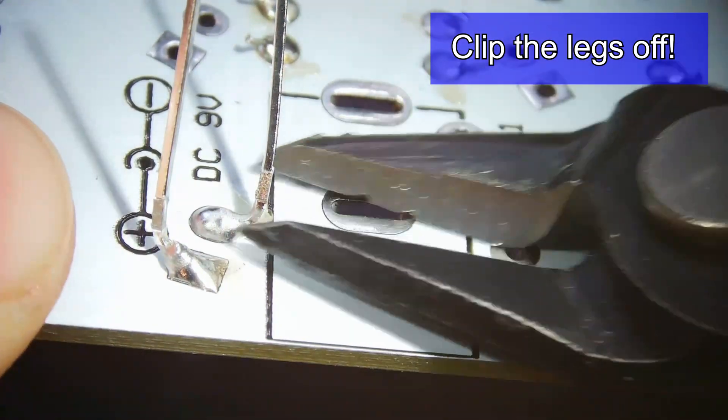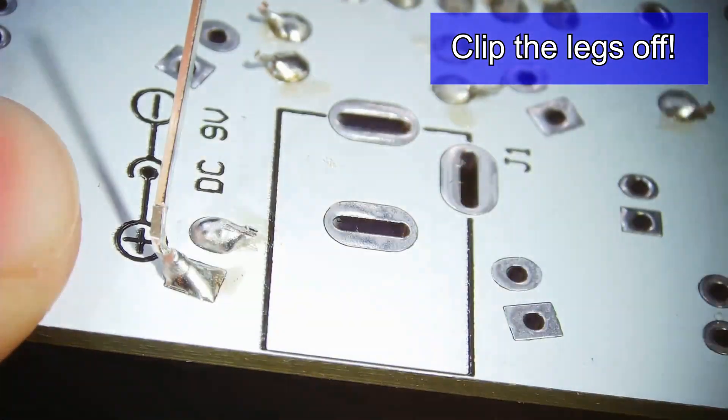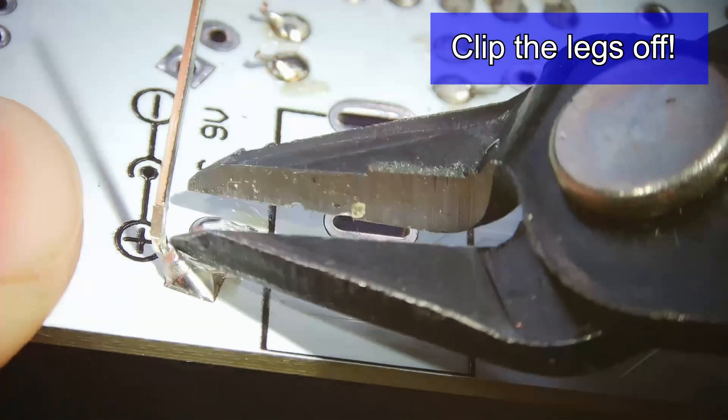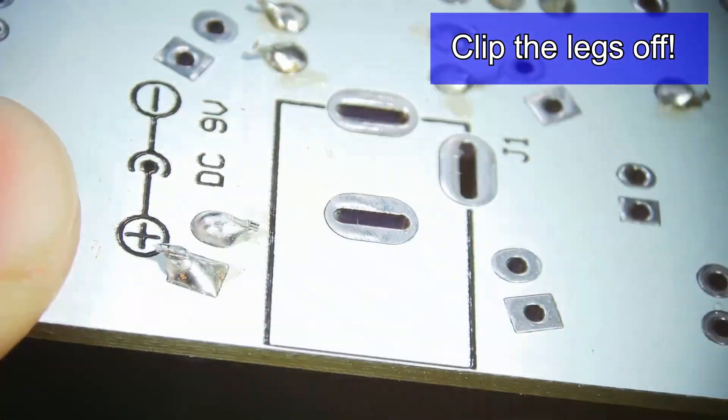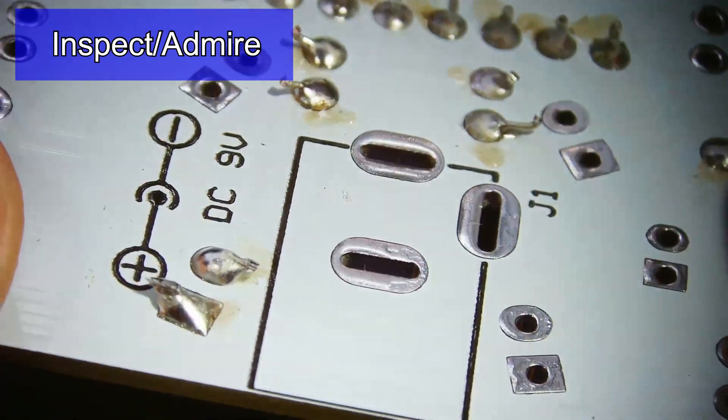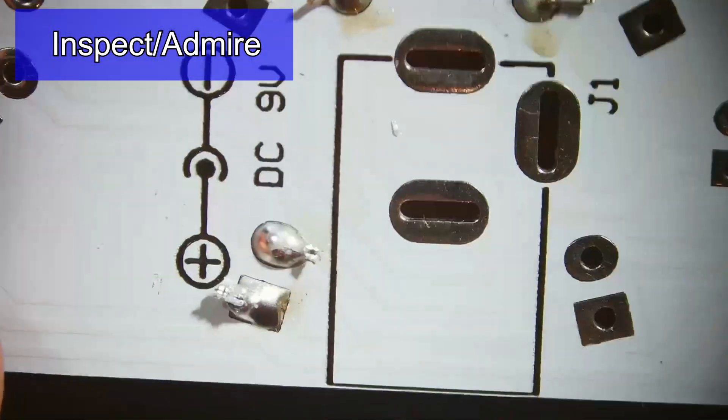So here we go. It should snip off very easily, and there's one. Now here comes the second one, just like that. Now time to admire your work—great job! You just soldered an LED.